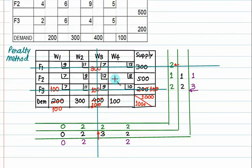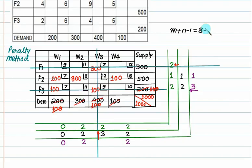Only 2 cells are left; no further penalty calculation is needed. We directly allocate: 100 to the next cell, 100 to another, and 300 to the last. All are cancelled out. Verification: rows = 3, columns = 4, so m+n-1 = 6. Counting occupied cells: 1, 2, 3, 4, 5, 6. The number of occupied cells is correct, so the initial basic feasible solution is valid.